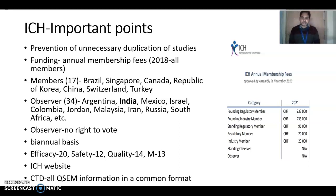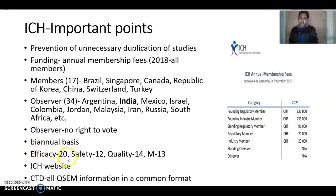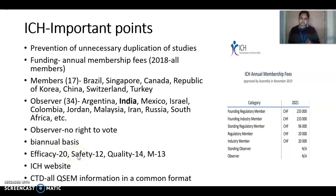ICH meetings are conducted on a bi-annual basis, meaning at least two meetings per year. Currently, for efficacy there are 20 subsections: E1, E2, E3, and so on. E6 covers Good Clinical Practice, and E7 and E8 cover different purposes related to efficacy.